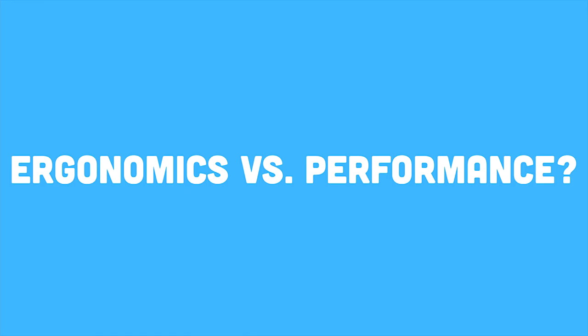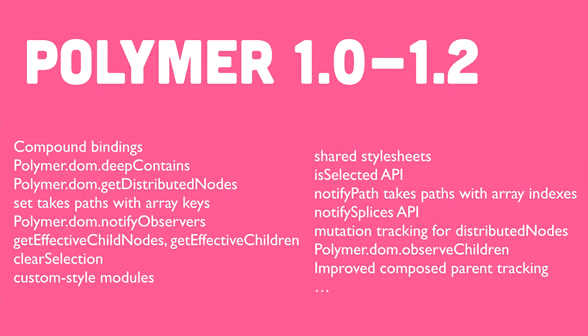These things seem like a bit of a trade-off, and they certainly are. We're always balancing both. Since Polymer 1.0, we've shipped a number of major new features including compound binding, distributed children changes, and ways to share style sheets between components — a whole set of features to make it easier to build components using Polymer.